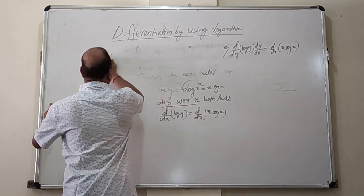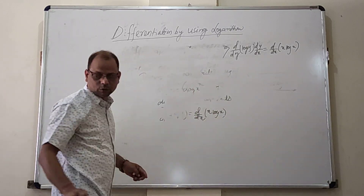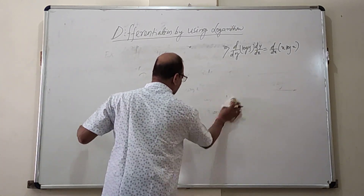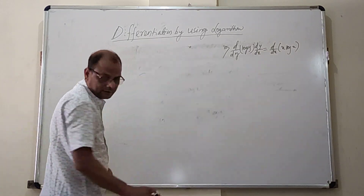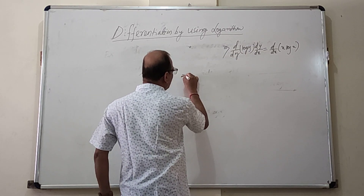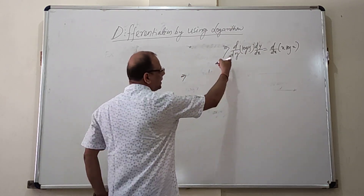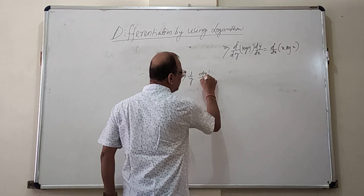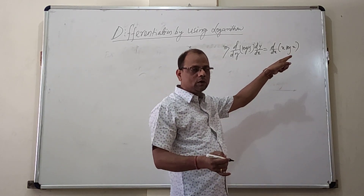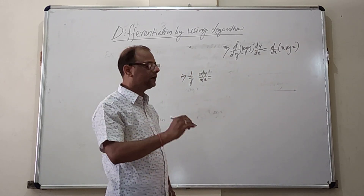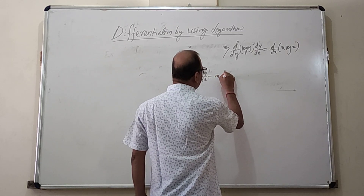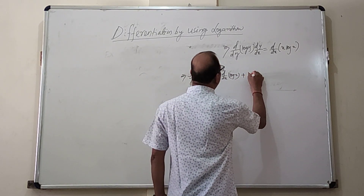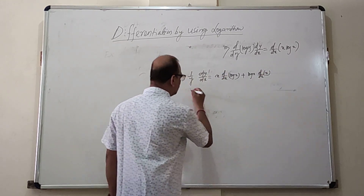The derivative of log y with respect to y is 1/y, so the left side becomes (1/y)·dy/dx. For the right-hand side, we use the product rule: first times derivative of second plus second times derivative of first. That gives x·d/dx(log x) plus log x·d/dx(x).